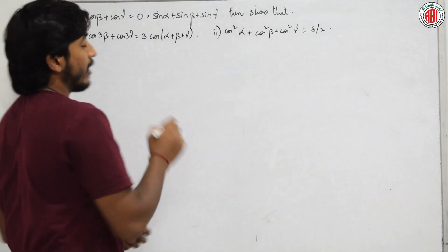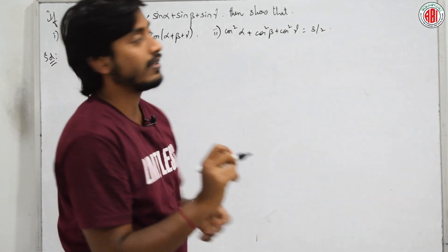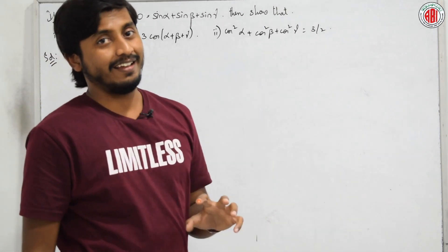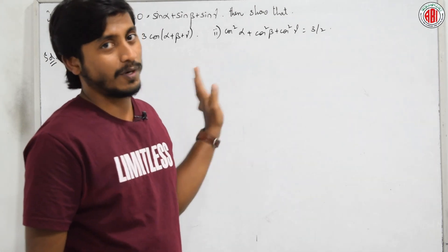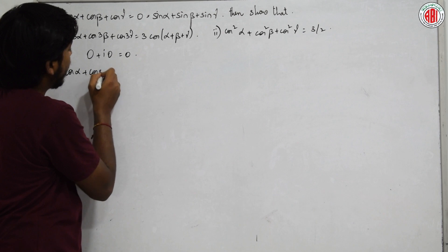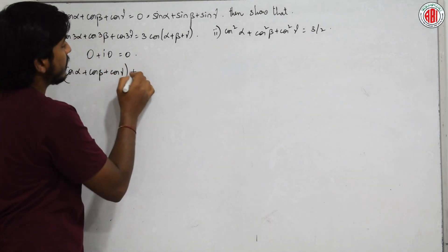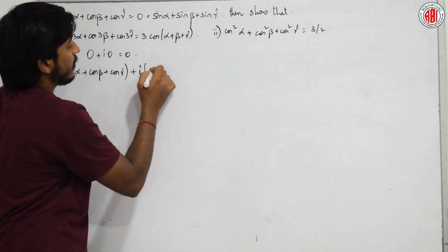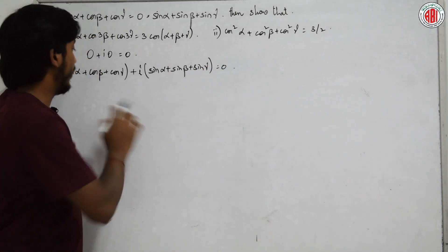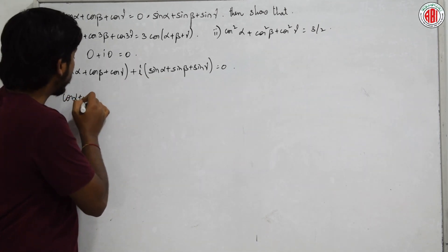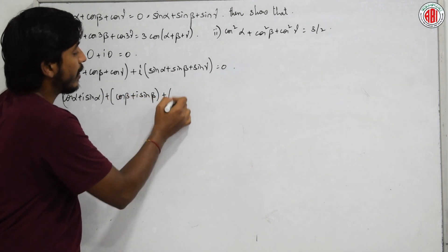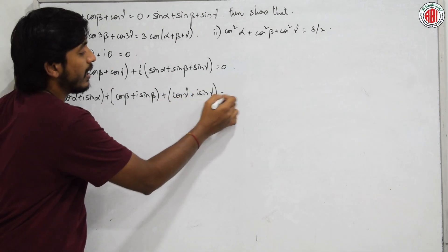An important observation is that 0 + i·0 = 0. Writing the first zero as (cos α+cos β+cos γ) and the second as (sin α+sin β+sin γ), we get (cos α + i sin α) + (cos β + i sin β) + (cos γ + i sin γ) = 0, that is, cis α + cis β + cis γ = 0.